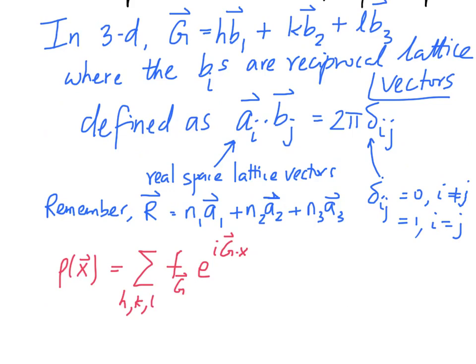And, in 3D, the Fourier transform of our three-dimensional charge density, ρ(x⃗), is going to be given by this expression where we have a triple sum. So, the sum is over h, k, l, all of whom are integers.